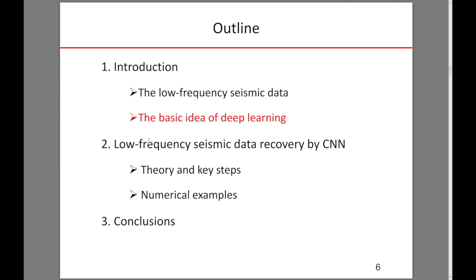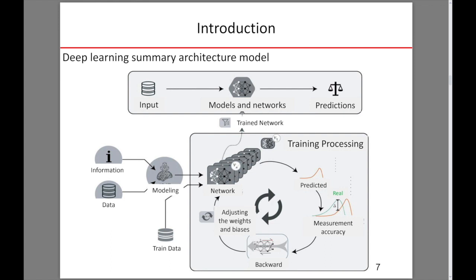Now let's go through the basic idea of deep learning. This picture shows the deep learning architecture model, which consists of two sections. One is the training process and the other is the application process. In the training process, we feed the input data to the network. The network makes a prediction.